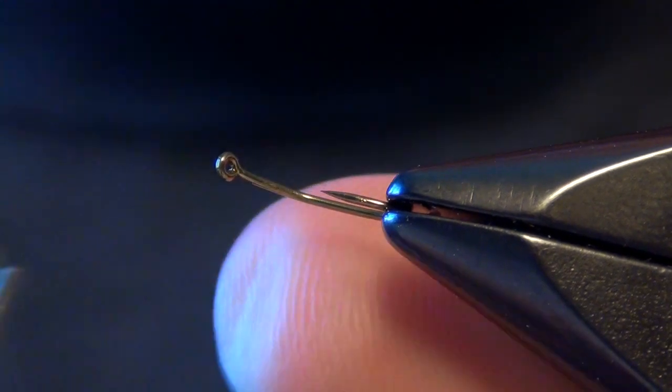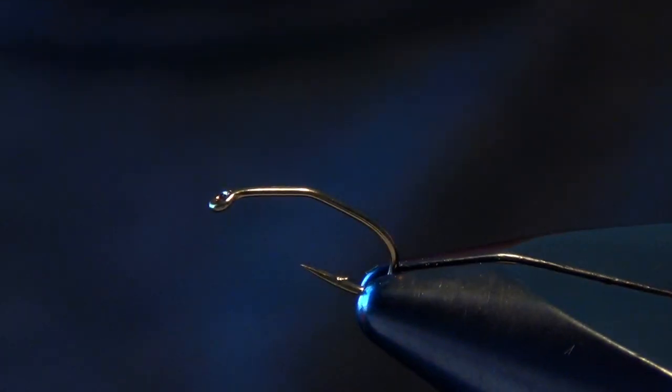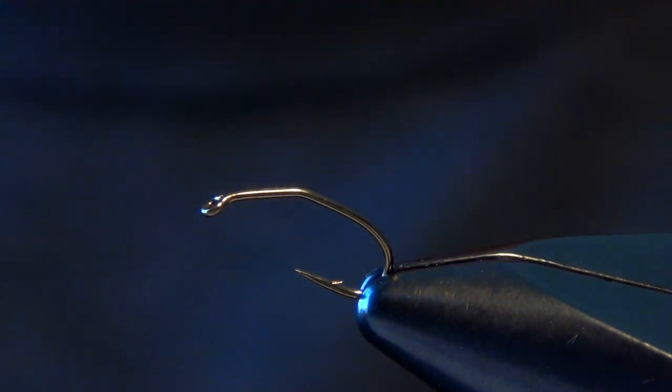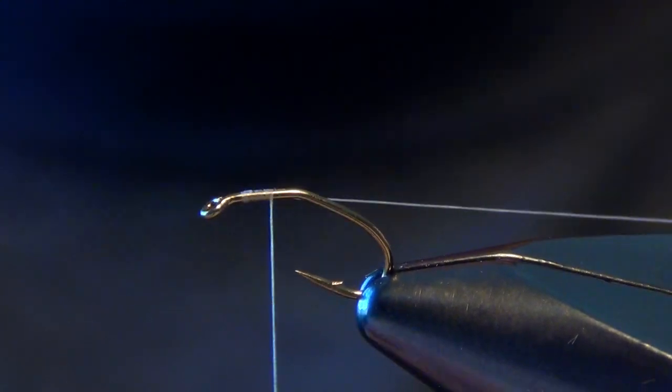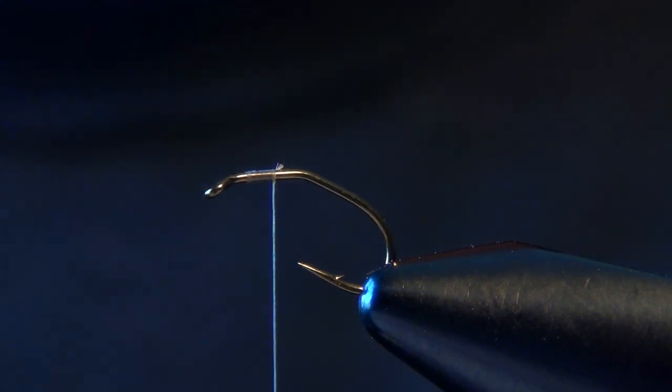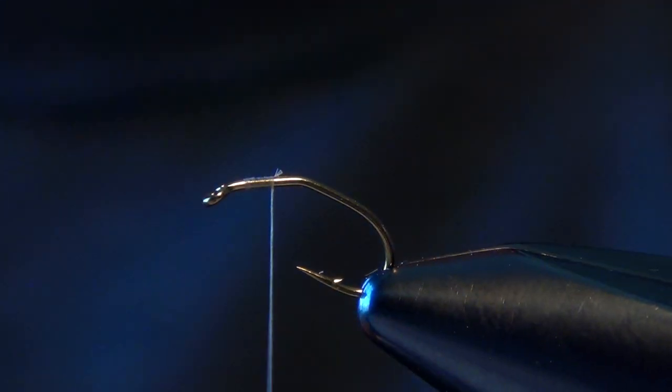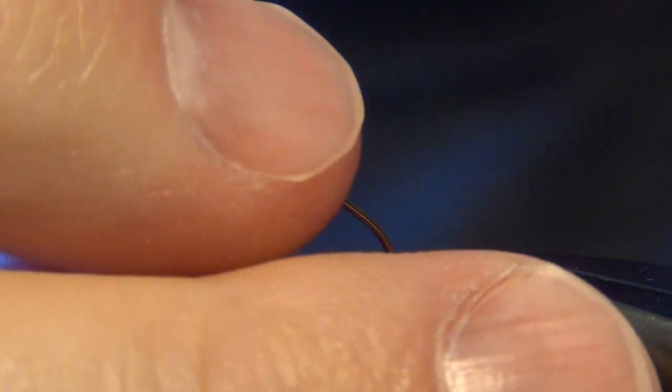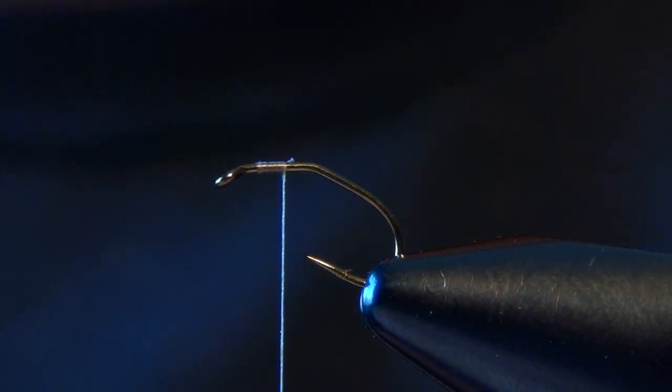We're going to take our tan Veevus thread. I like to use a 12/0 or a 14/0 and we're just going to start our thread right up there by the thorax. Notice I put the hook in the vise with the part that I bent kind of flat. Reason being, if you put it down in the vise like this, your thread's going to constantly fall off the front of the eye of the hook.